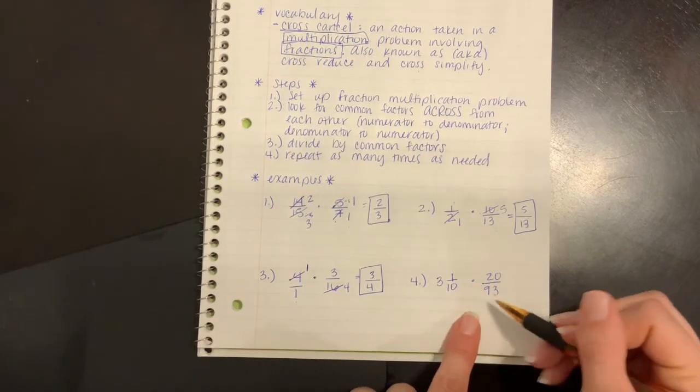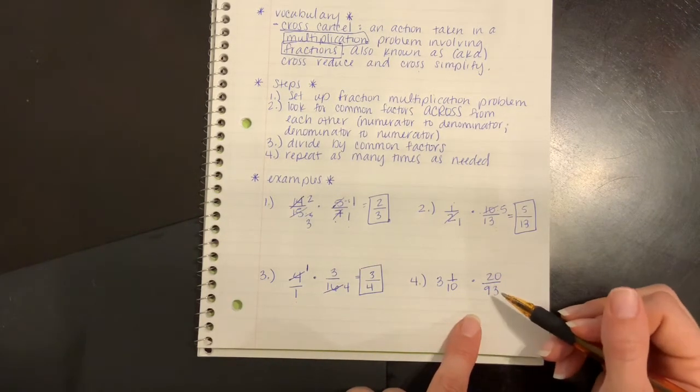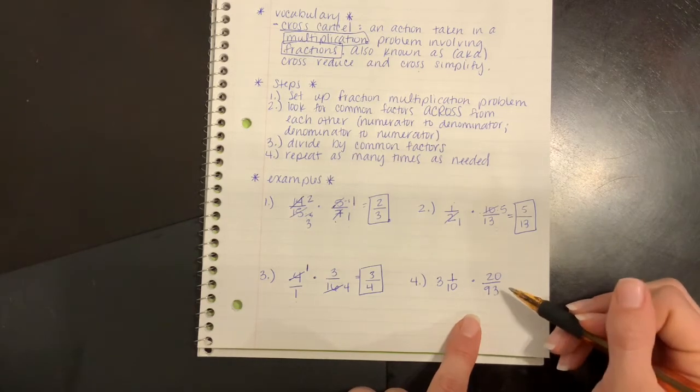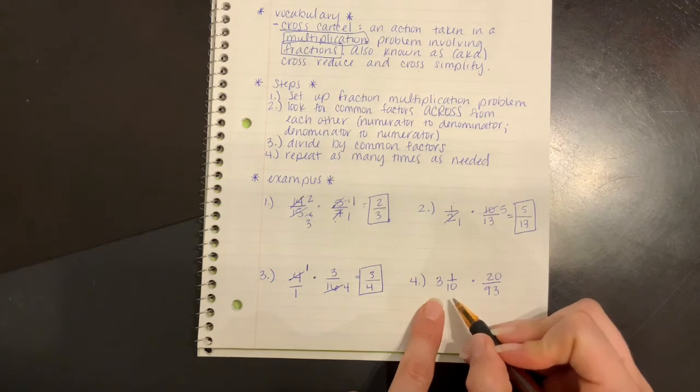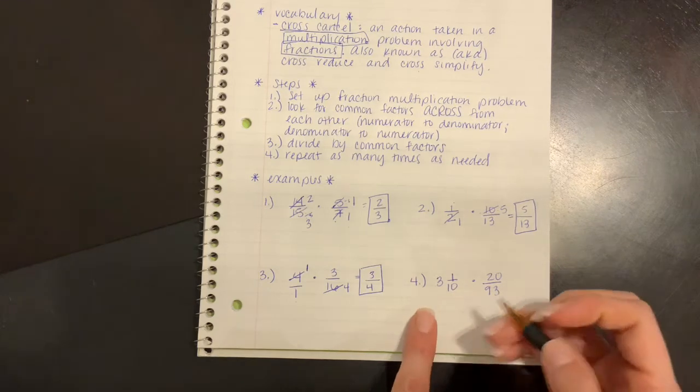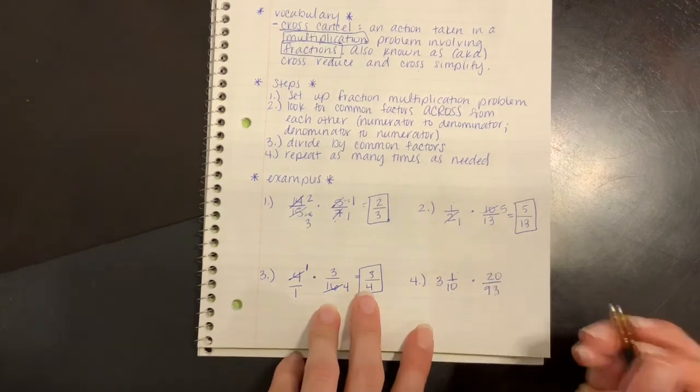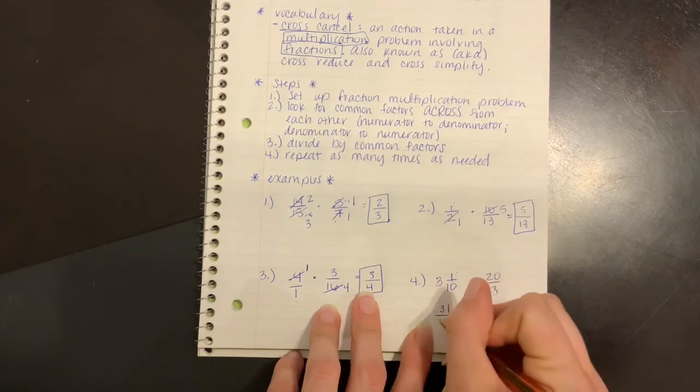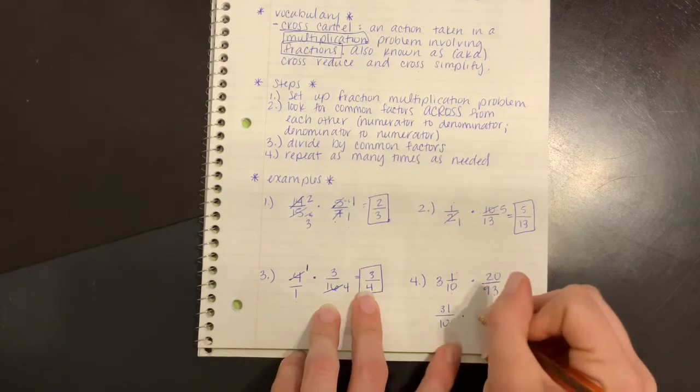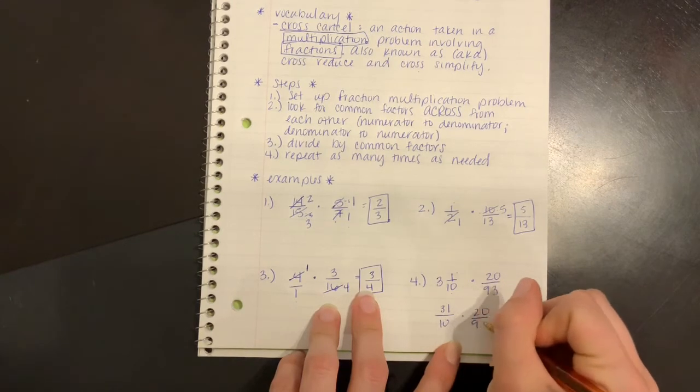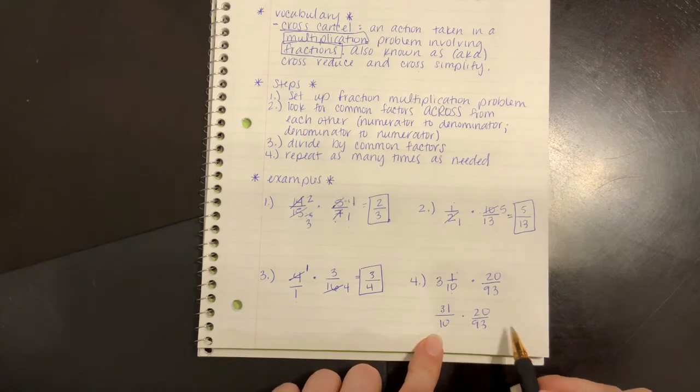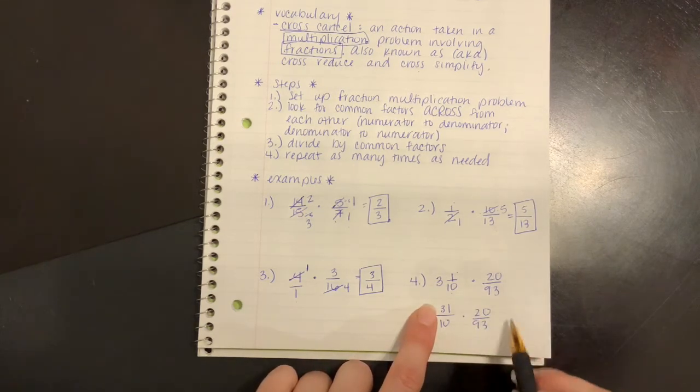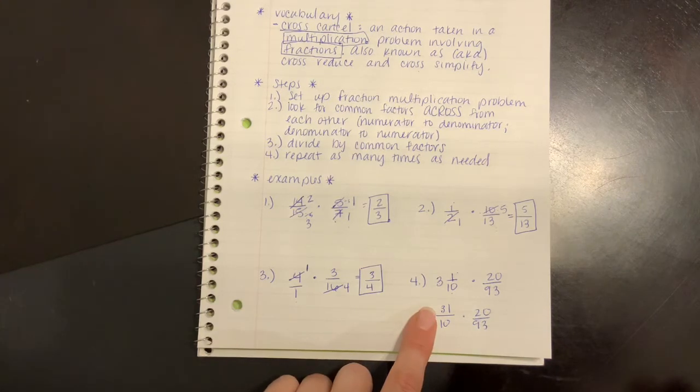Last problem. This is a really ugly one. I want you guys to notice how much easier it's going to make this problem if I cross-simplify. First thing is I have to change this from a mixed number to an improper fraction. Three times ten plus one is 31/10 times 20/93. Now, there is no way that I'm going to want to multiply ten times ninety-three and thirty-one times twenty and then reduce my answer in the end. I can cross-simplify and make that so much easier.